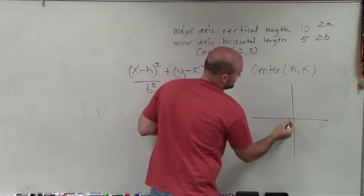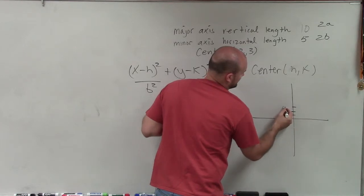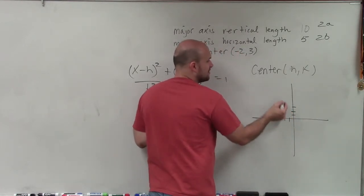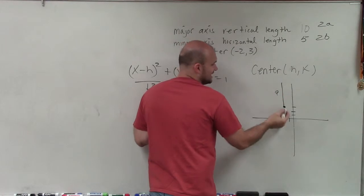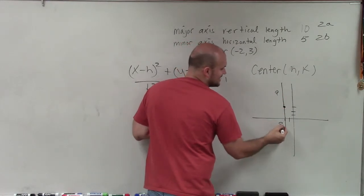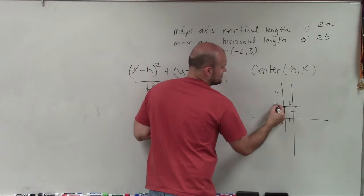So we have a center of negative 2, 3. 1, 2, 3. OK, remember the distance from the center to a major vertices is A, and that's the same distance down, there would be A. That's B, that's B.